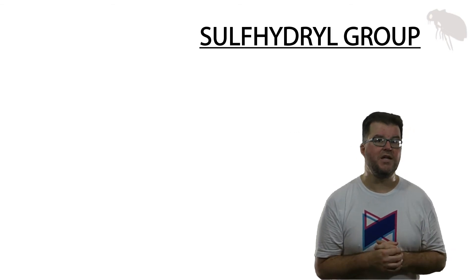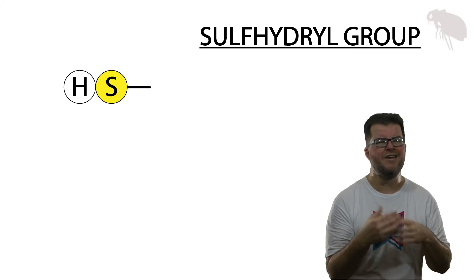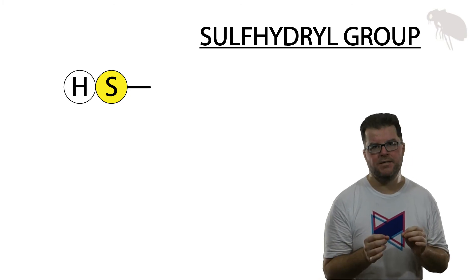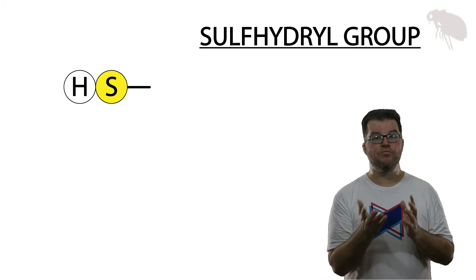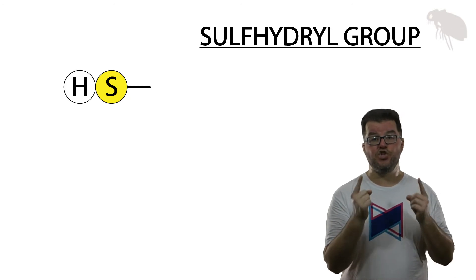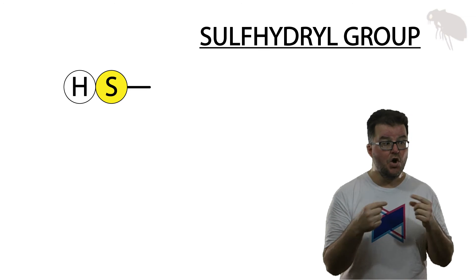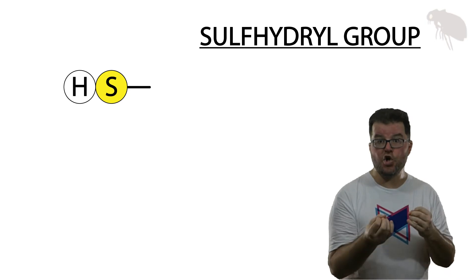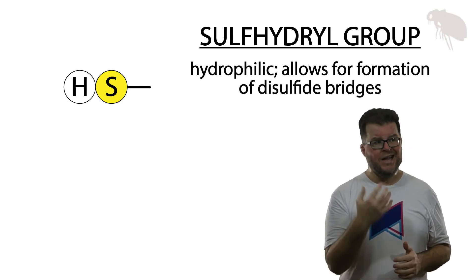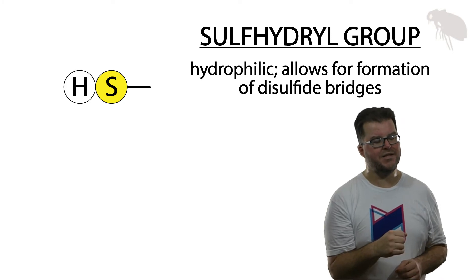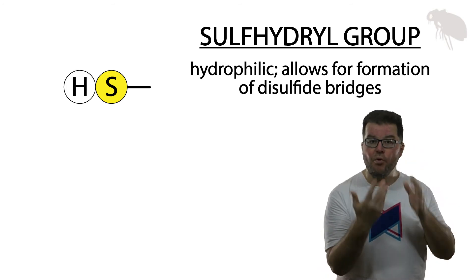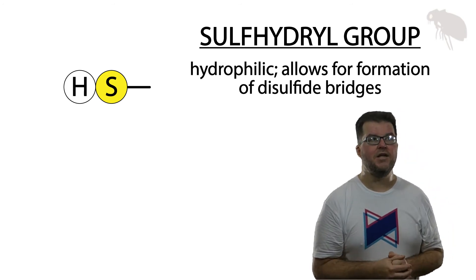Now let's go to the last one: the sulfhydryl group. The name is self-explanatory — it's a sulfur bound to a hydrogen. Kind of like hydroxyl. The sulfhydryl group is hydrophilic, but really the place we see it play out the most is in protein chemistry. Particularly when we get two sulfhydryl groups — either from different molecules or different parts of a single molecule — together where they connect and form a very strong double covalent bond called a disulfide bridge. Sulfhydryl groups play a key role in the tertiary folding structure of proteins, and so this is important in building proteins into their proper conformations.